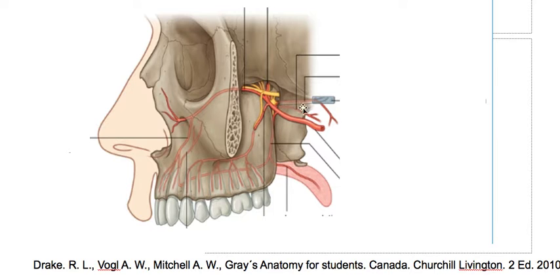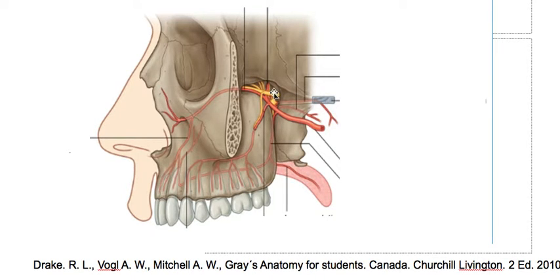Then we have the pharyngeal branch that supplies the posterior part of the nasal cavity and the sphenoidal sinus. This is the pterygoid artery, or the artery of the pterygoid canal, that will supply the cartilage filling the foramen lacerum. So those are the branches of the maxillary artery.